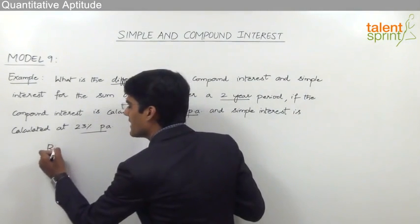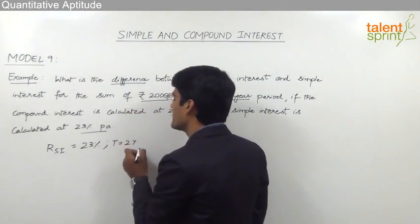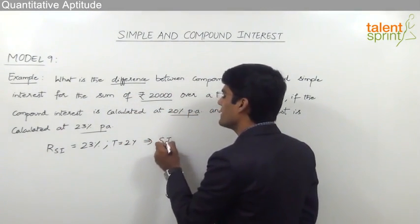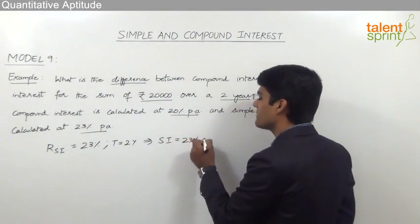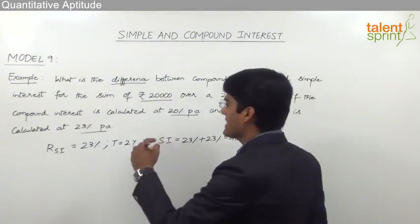Going by the smart way of solving the problem, we know that if the rate of simple interest is equal to 23% and the time is 2 years, then the total simple interest that we get would be 23% plus 23%. That is nothing but 46%.